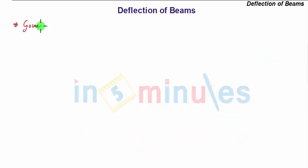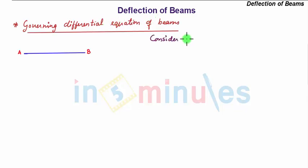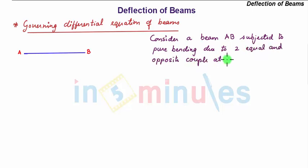So let us now derive the governing differential equation of beams. Consider a beam AB subjected to pure bending due to two equal and opposite couple at its ends.